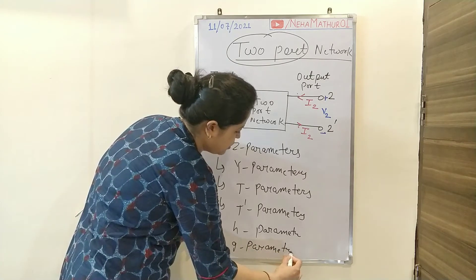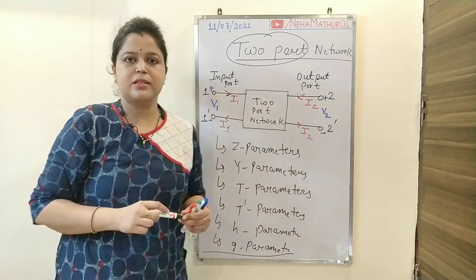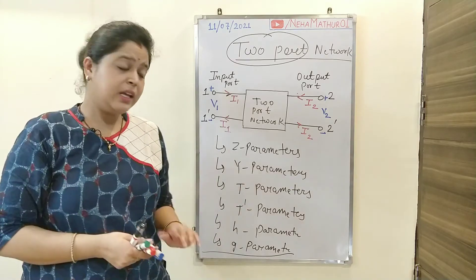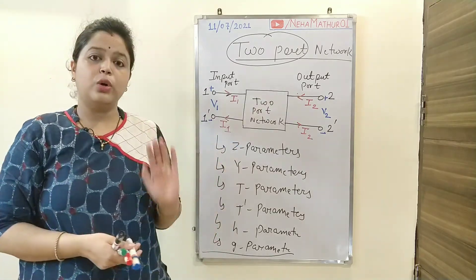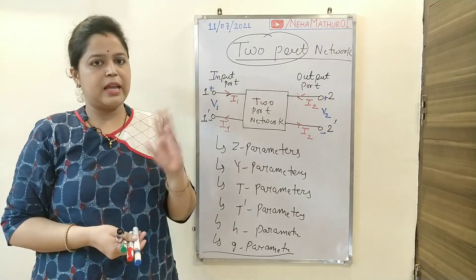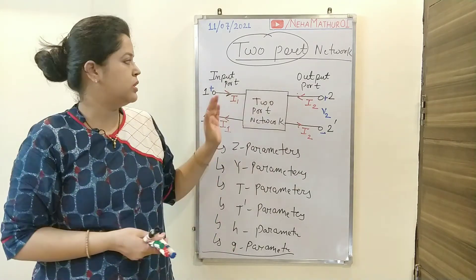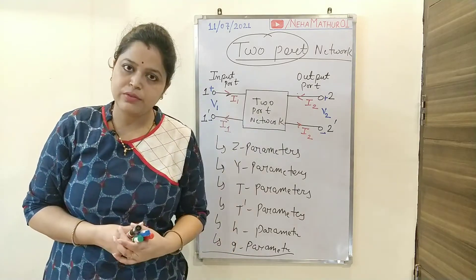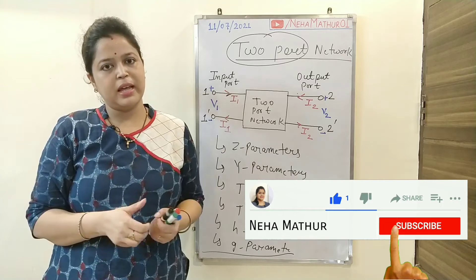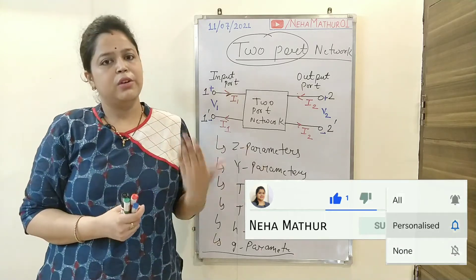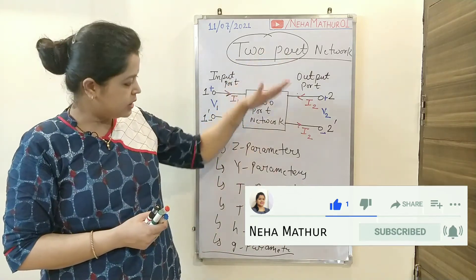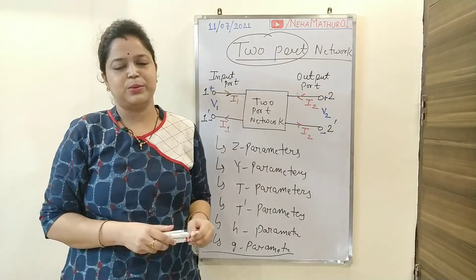We are going to discuss all the parameters related to two-port networks one by one. This classification is based on the variables we choose — I1, I2, V1, and V2. This is all about the basics of two-port network. If you are following the concept, consider subscribing to my channel and clicking the bell icon. In the next series we will discuss all the categories of these two-port networks. Thank you.